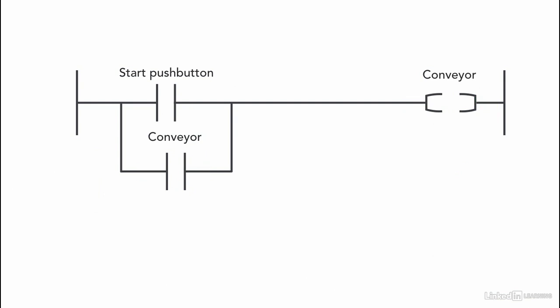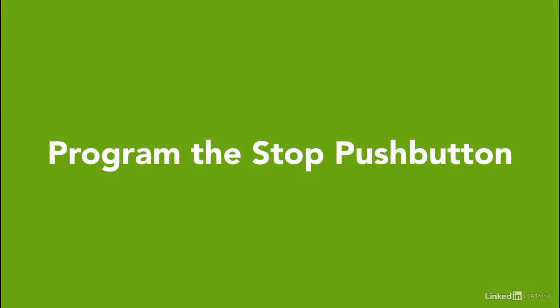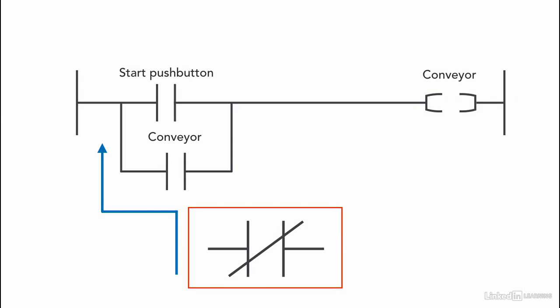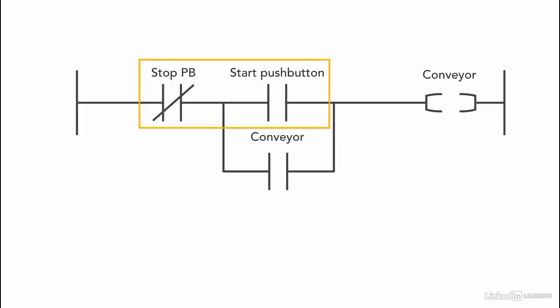Now we need to program the stop push button so that the conveyor stops when it is pressed. Since we're using a normally open contact for the stop push button, we are going to use an XIO instruction to keep continuity, and we add it in series with the start push button. In the normal situation, the stop push button is not pressed — it's a normally open contact, so the memory location equals zero. When using an XIO instruction, the instruction is highlighted when the memory location is zero, so it's highlighted without needing to press the stop push button, and that's what we need, because the stop is only pressed when we want to stop the conveyor.